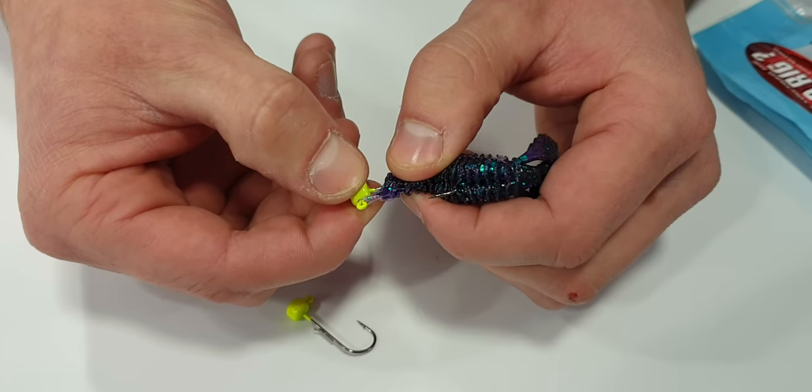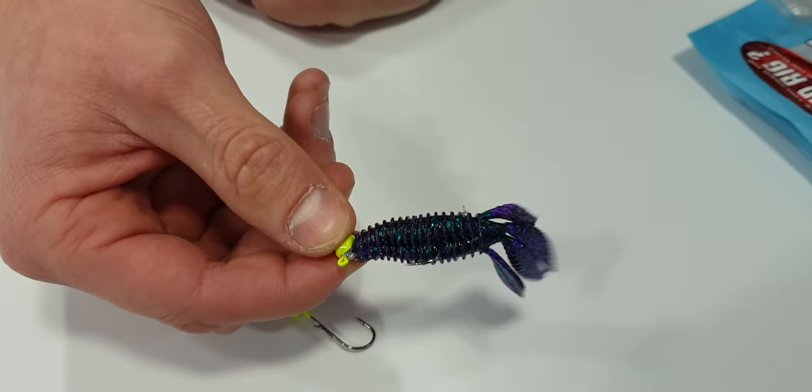And that'll actually keep that lure down in place and stop it sliding up the shank of your hook.